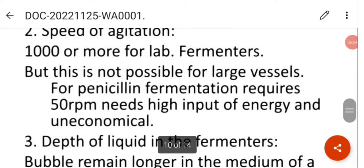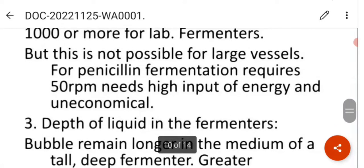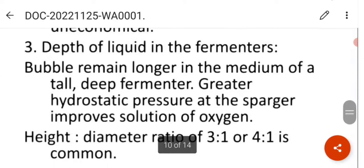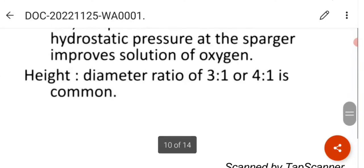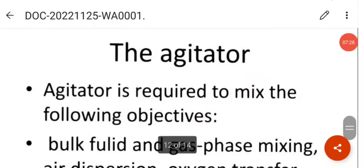Speed of agitation is a thousand or more for the lab fermenters, but this is not possible for the large vessels. For penicillin fermentation requires 50 rpm. It needs high input of energy and is uneconomical as well. Depth of liquid in the fermenters - bubble remains longer in the medium of a tall, deep fermenter. Greater hydrostatic pressure at the sparger improves the solution of the oxygen. Height diameter ratio of 3 to 1 or 4 to 1 is common.